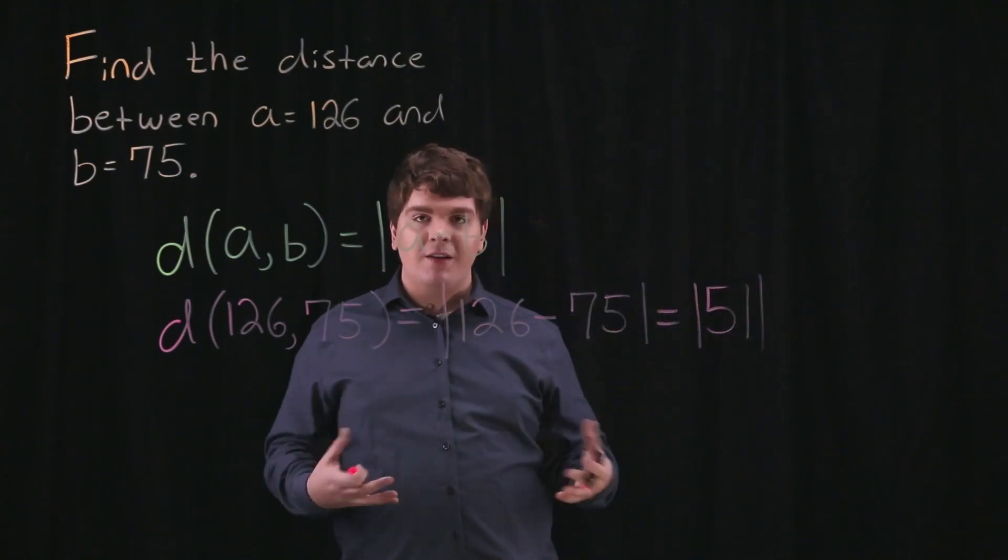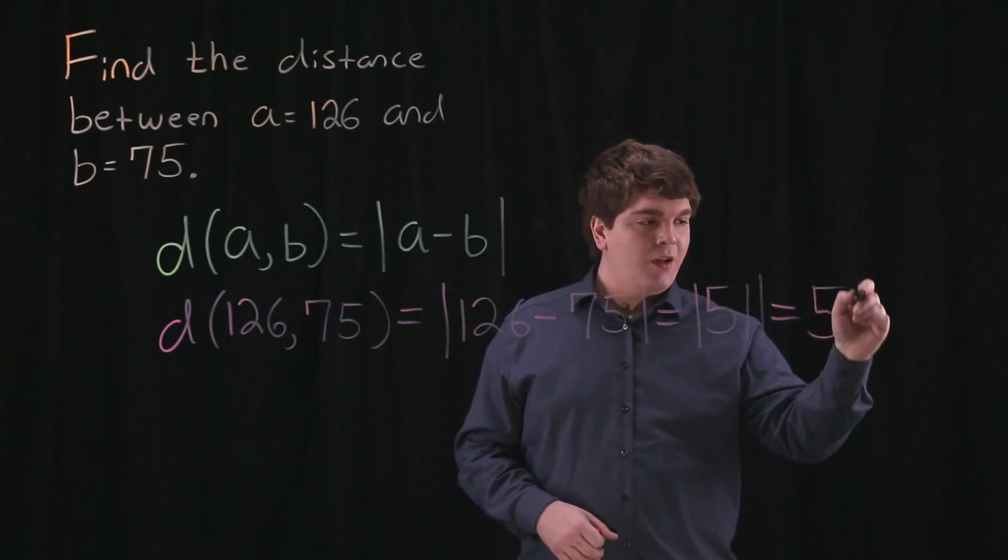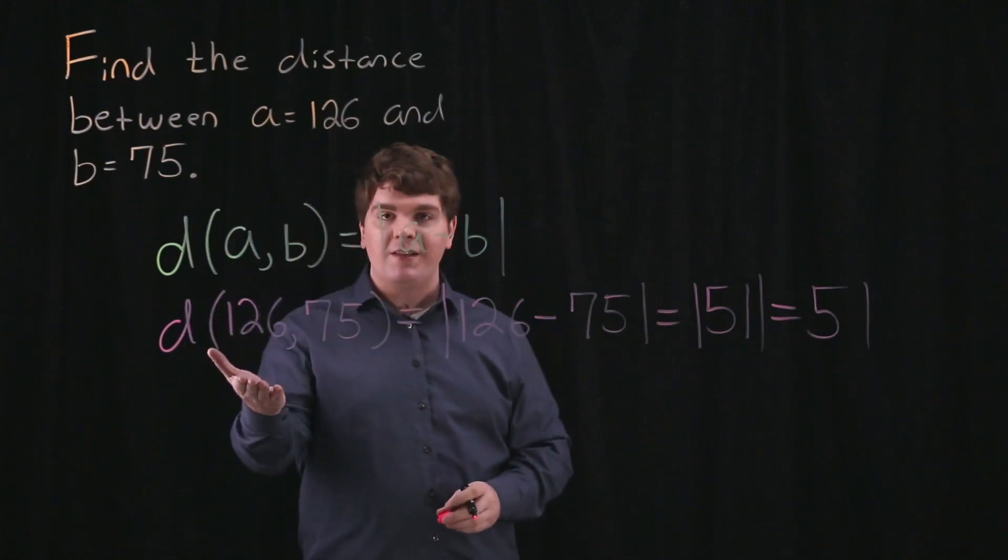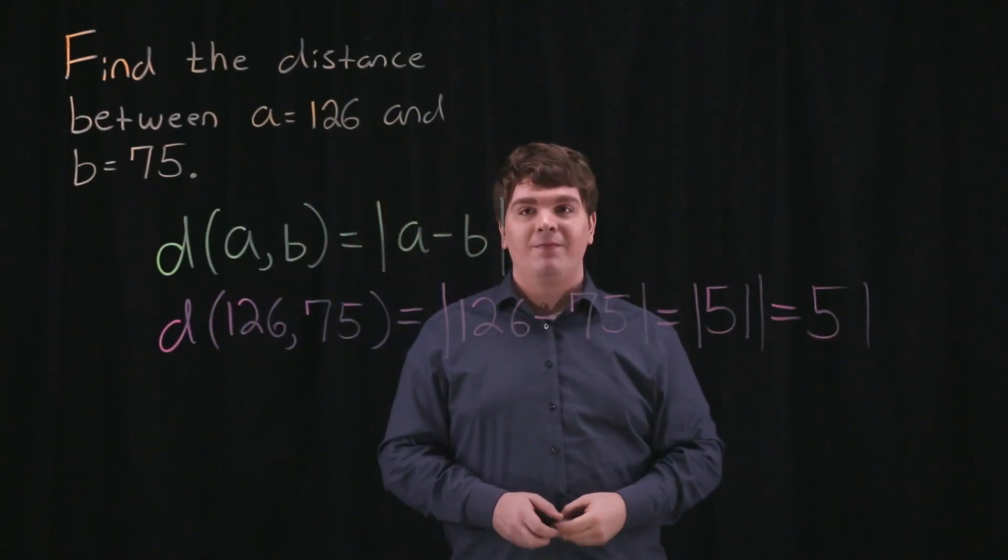And because 51 is positive, the absolute value of 51 is equal to 51. So what we find is that the distance between these two points, 126 and 75, is equal to 51. Thank you.